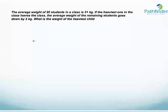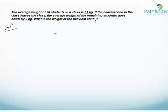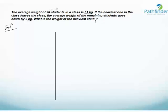Let us take a look at another question. The average weight of 20 students in a class is 51 kg. If the heaviest one in the class leaves, the average weight of the remaining students goes down by 2 kg. What is the weight of the heaviest child? The first thing to determine is what is the average from which to calculate the deviation.